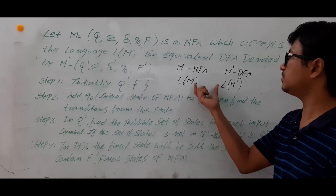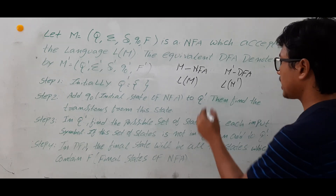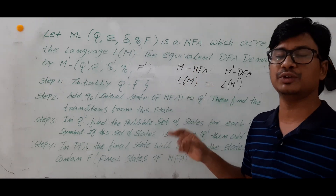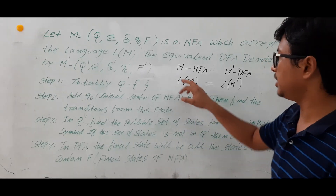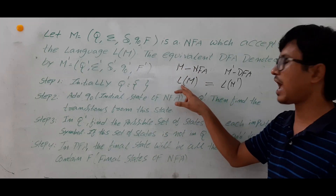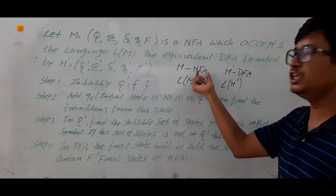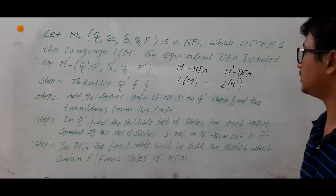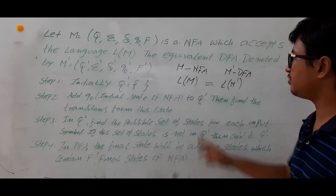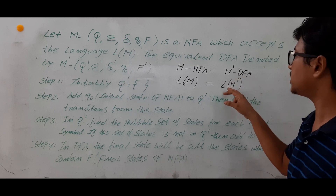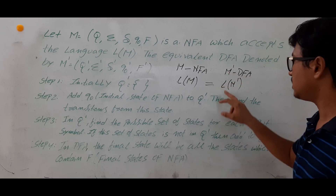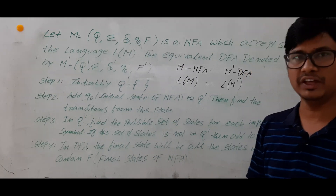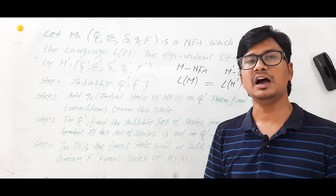Now what is the relation between language L(M) and language L(M')? They should be equivalent. If they are equivalent then only I can say that you have converted the NFA to a DFA properly, otherwise the conversion is wrong. So if NFA M accepts L(M) and the equivalent DFA M' accepts L(M'), those two languages must be equal for the conversion to be correct.